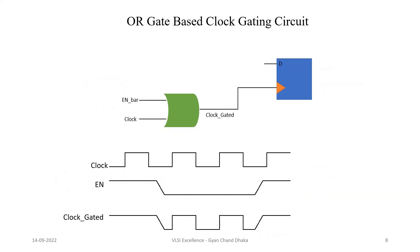When the enable-bar signal toggles when the clock signal is low, we will get a glitch in the output waveform. So again, let's think about how we can modify this circuit so that our enable-bar signal only toggles when the clock signal is high. Let's pause the video and think of any kind of solutions. If you are able to think of a solution, please write it down in the comment section.